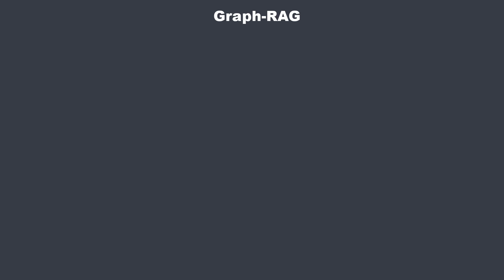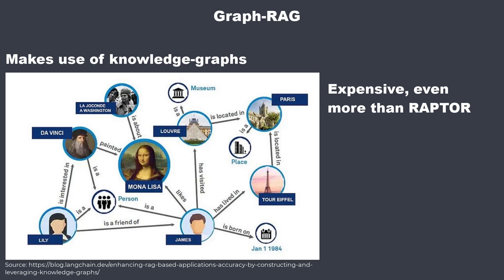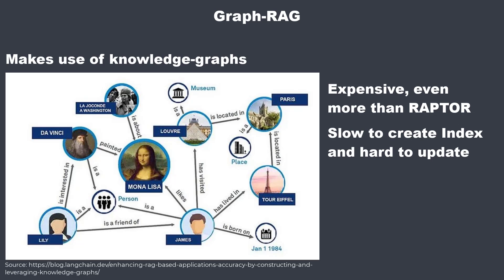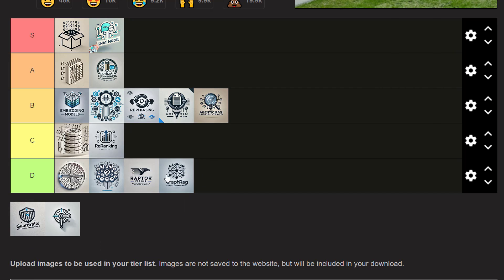The next technique is Graph RAG — a hyped technique that uses graph-based methods in retrieval-augmented generation to manage context and retrieval more efficiently. It's well suited when documents have many relations, like persons or organizations, making it easier to retrieve related documents. But like RAPTOR, it's expensive, slow, and makes document updates very hard. You should only use it if you know exactly when and why. I'd put Graph RAG in D tier — not because it's bad, but because it's a very niche technique.